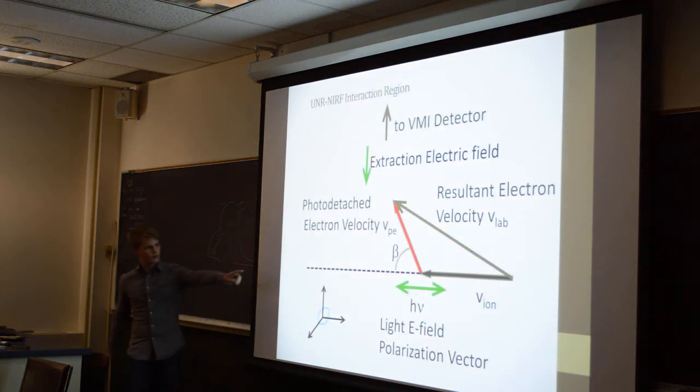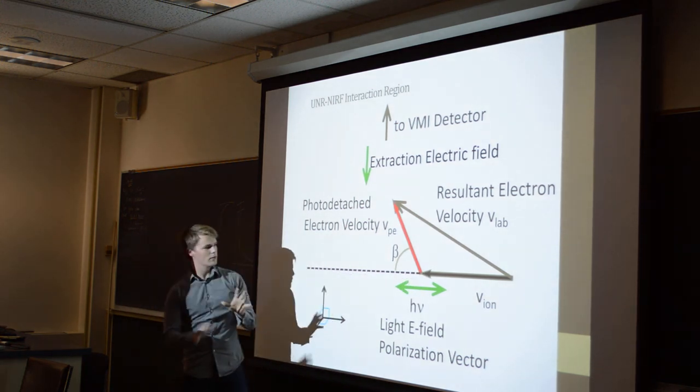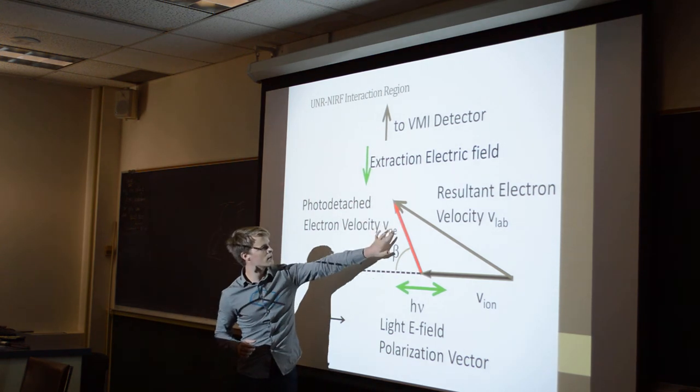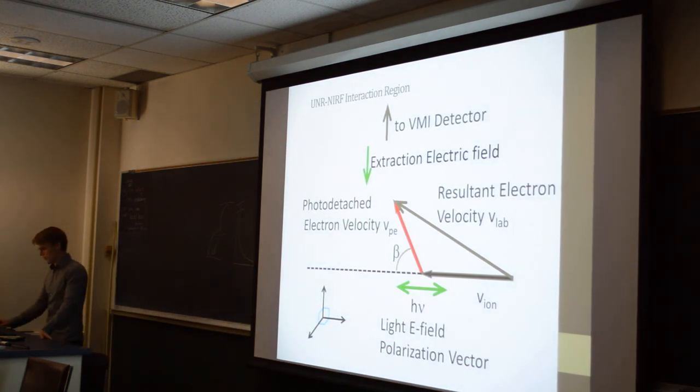So again, this is the velocity of the ion in its center of mass frame. And then the lab frame goes here. And this resulting vector is the velocity of the photodetached electron.